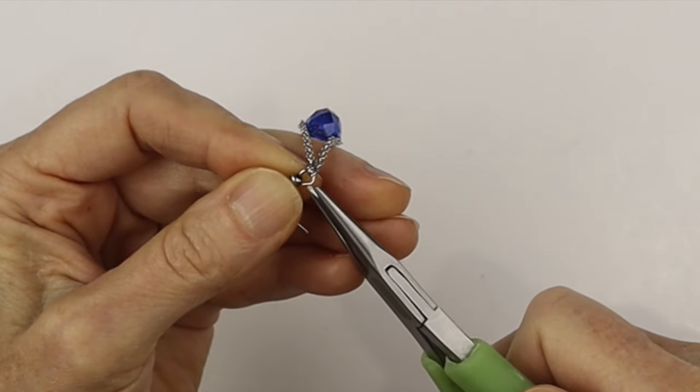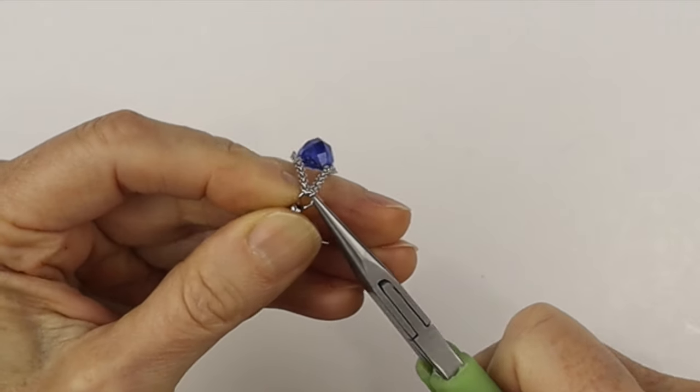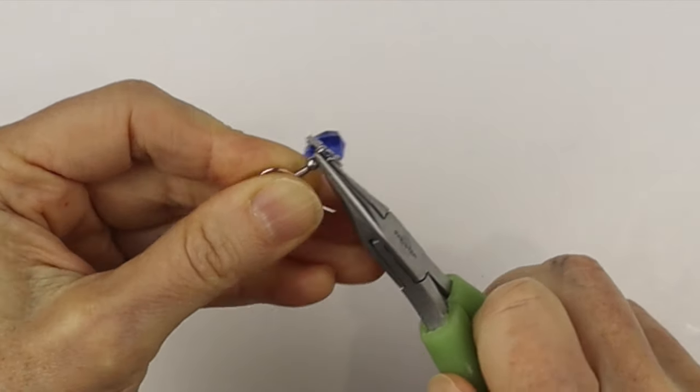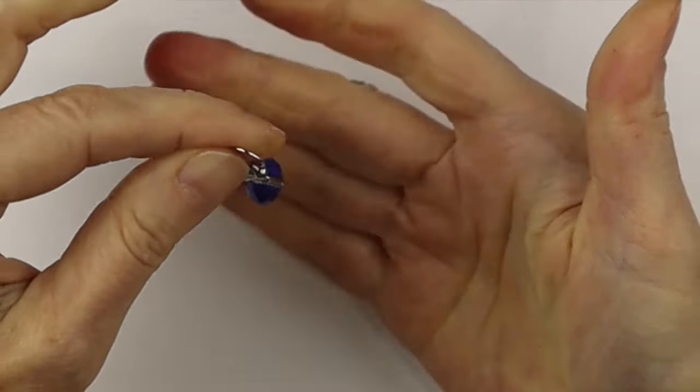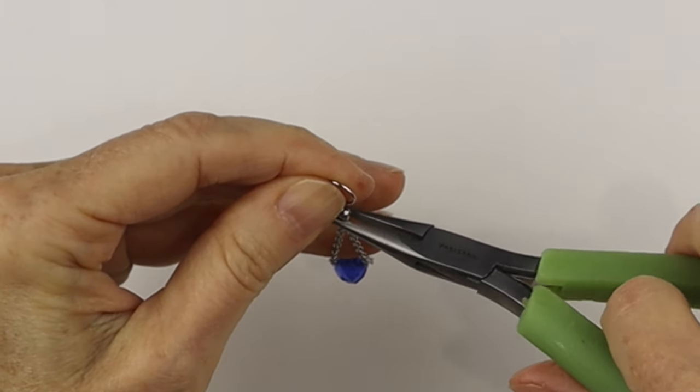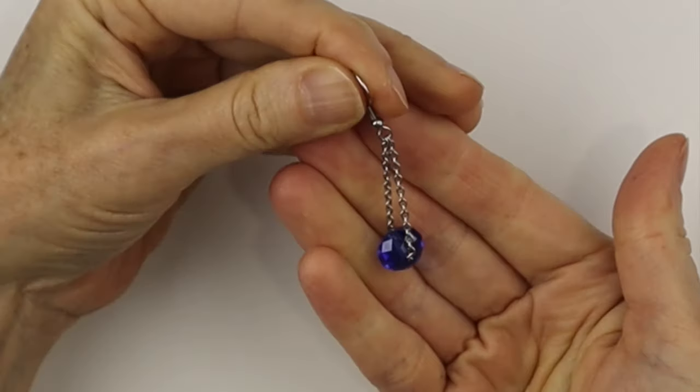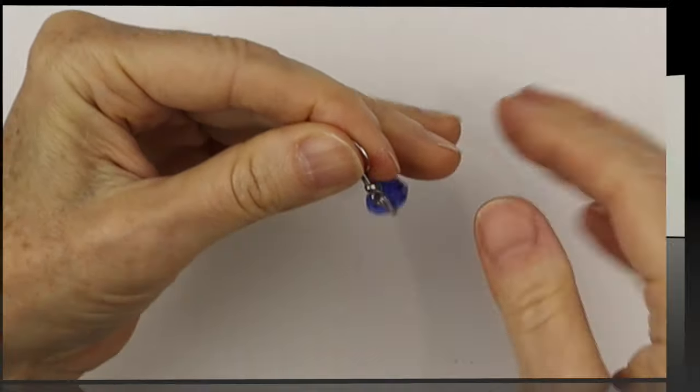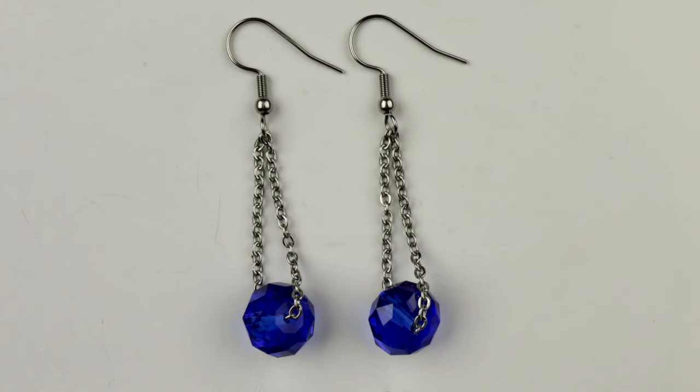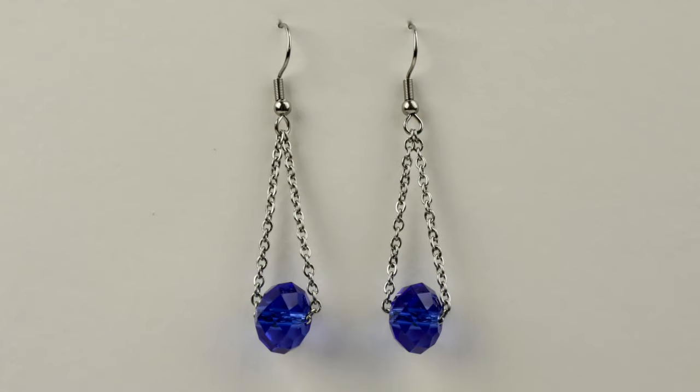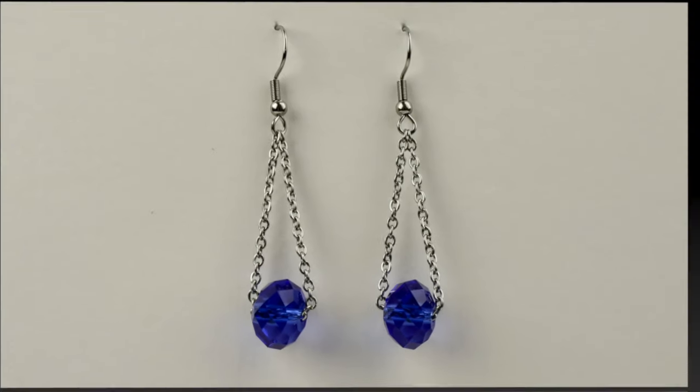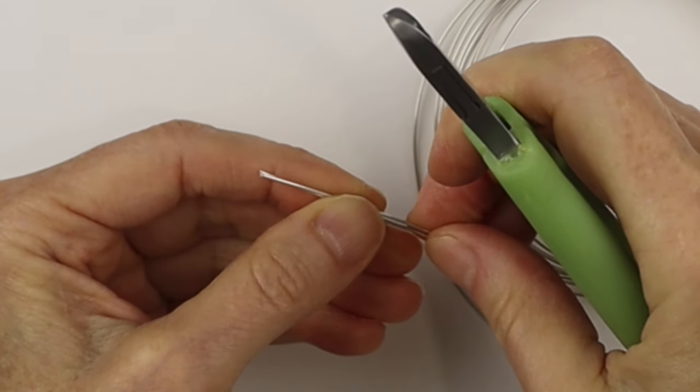And we'll take our chain nose pliers and close up the hook so there's no gap. You'll see it sits a little bit off, so we're going to twist that hook a little quarter turn so it sits straight ahead. And there's the simple chain earrings. Now if you want to make these earrings with beads with smaller holes...